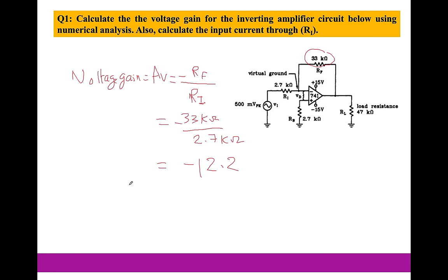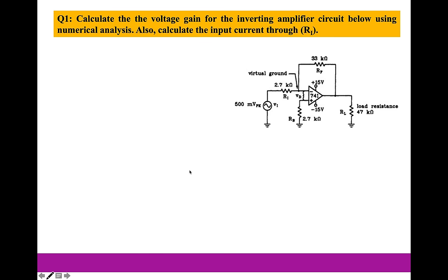The second thing we need to calculate is the current through R1. Before we calculate that current, we want to make sure we understand how the operation amplifier functions in a feedback circuit. This 2.7 kilo ohms is the input impedance, and we will use Ohm's law to find the current.